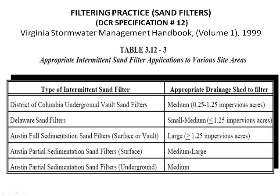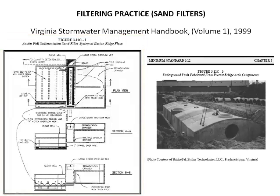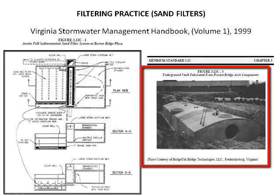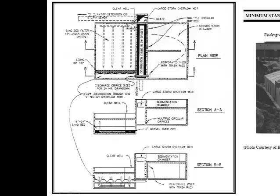Table 3-12-3 of the 1999 Virginia Storm Water Management Handbook, Volume 1, gives the appropriate intermittent sand filter applications to various site areas. The maximum contributing drainage area for surface sand filters is 5 acres. This is limited to a maximum of 2 acres for perimeter or underground filters. A non-structural sand filter can be provided for sites with contributing drainage area less than 2 acres.